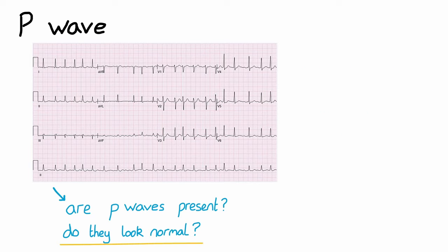Next, we need to check the PR interval. This is the time from atrial depolarization to ventricular depolarization, which essentially represents atrioventricular node conduction. A normal PR interval is 0.12 to 0.2 seconds, or 3 to 5 small squares. A prolonged PR interval is anything over this.